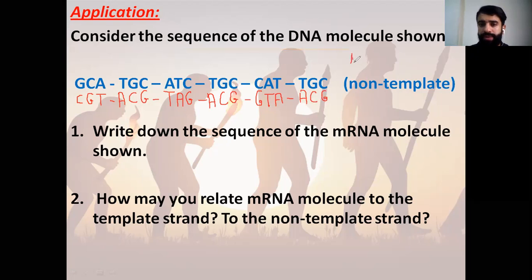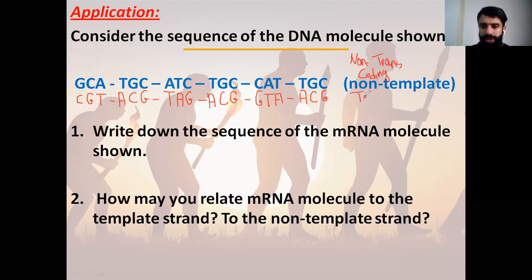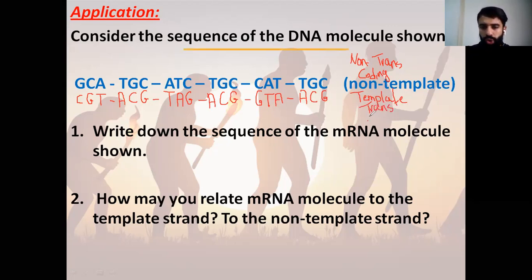The non-template, as I said, is called the non-transcribed and also it's called the coding strand. While this complementary sequence is the template — the complementary one is called the template, or the transcribed strand. If I want to find out the sequence of the mRNA molecule here, what do I have to do? How many ways can you find out the sequence of the mRNA?